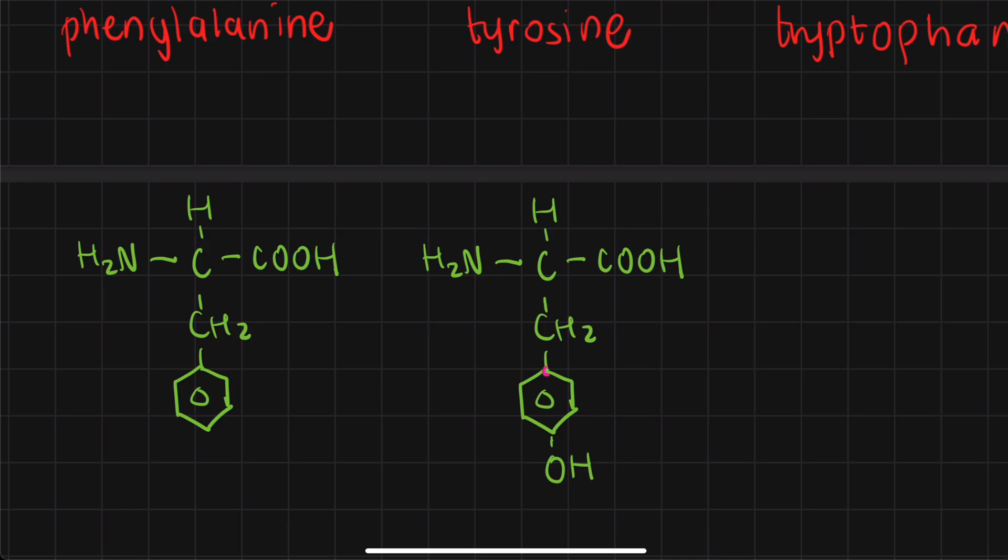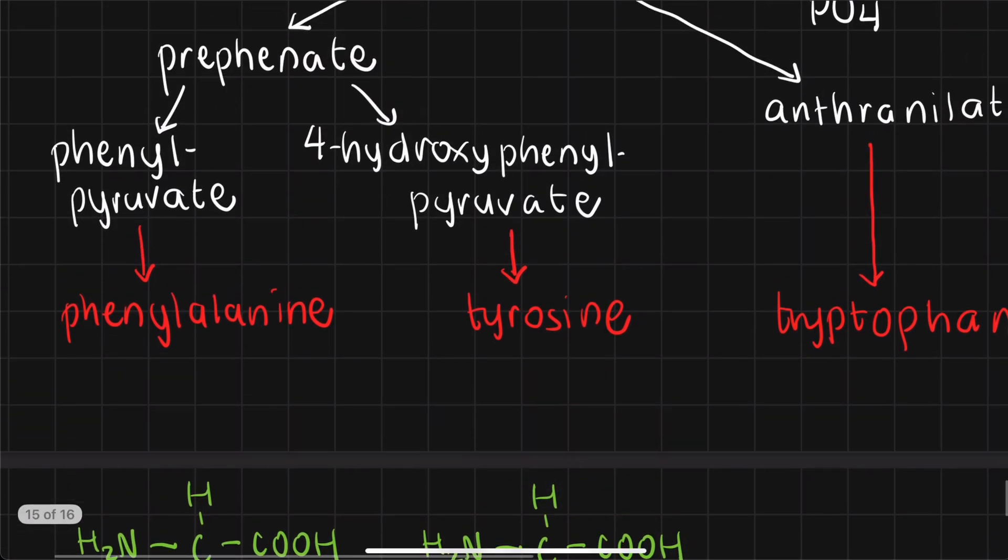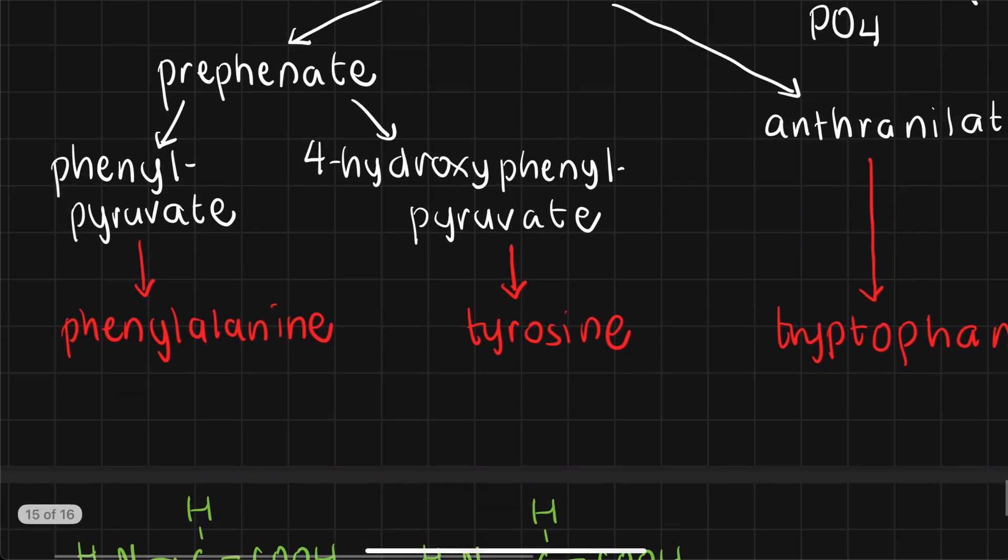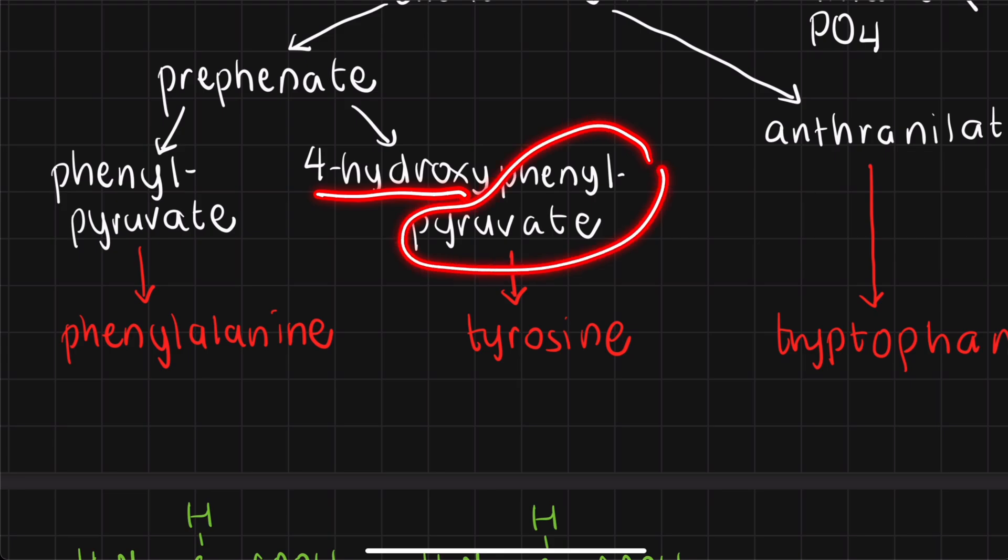And if I even go more specific, if for example, we note that this carbon holding the CH2 is locant 1, what would be the locant of this OH below? 4, right? 1, 2, 3, 4. And that means that we can just consider tyrosine as the 4-hydroxy version of phenylalanine. And I just wanted to say that because as a guide to people who want to memorize or who need to memorize this pathway, that should now justify why tyrosine, the 4-hydroxy version of phenylalanine, comes from the 4-hydroxy version of the precursor of phenylalanine. Right?